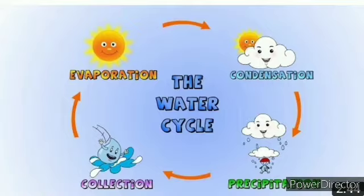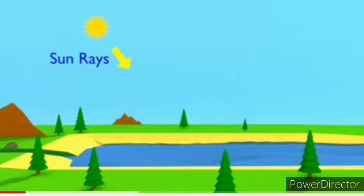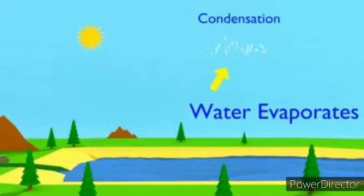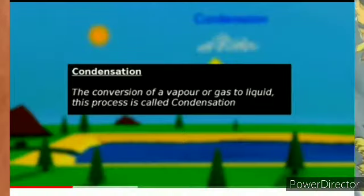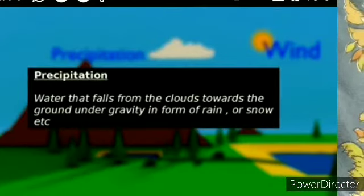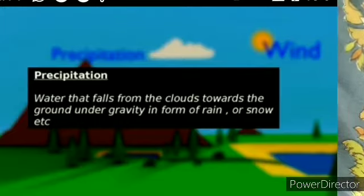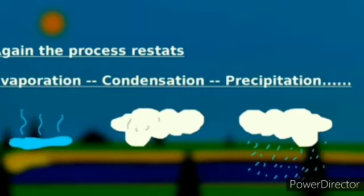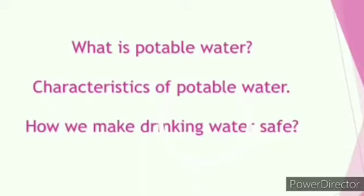So the four processes are: evaporation, condensation, precipitation, and collection. Due to the sun's heat, water evaporates, then condenses and makes clouds. When clouds become heavy, water falls toward the ground under gravity as rain or snow. The rain water then collects as ground water or flows toward rivers and lakes. This is the complete water cycle.